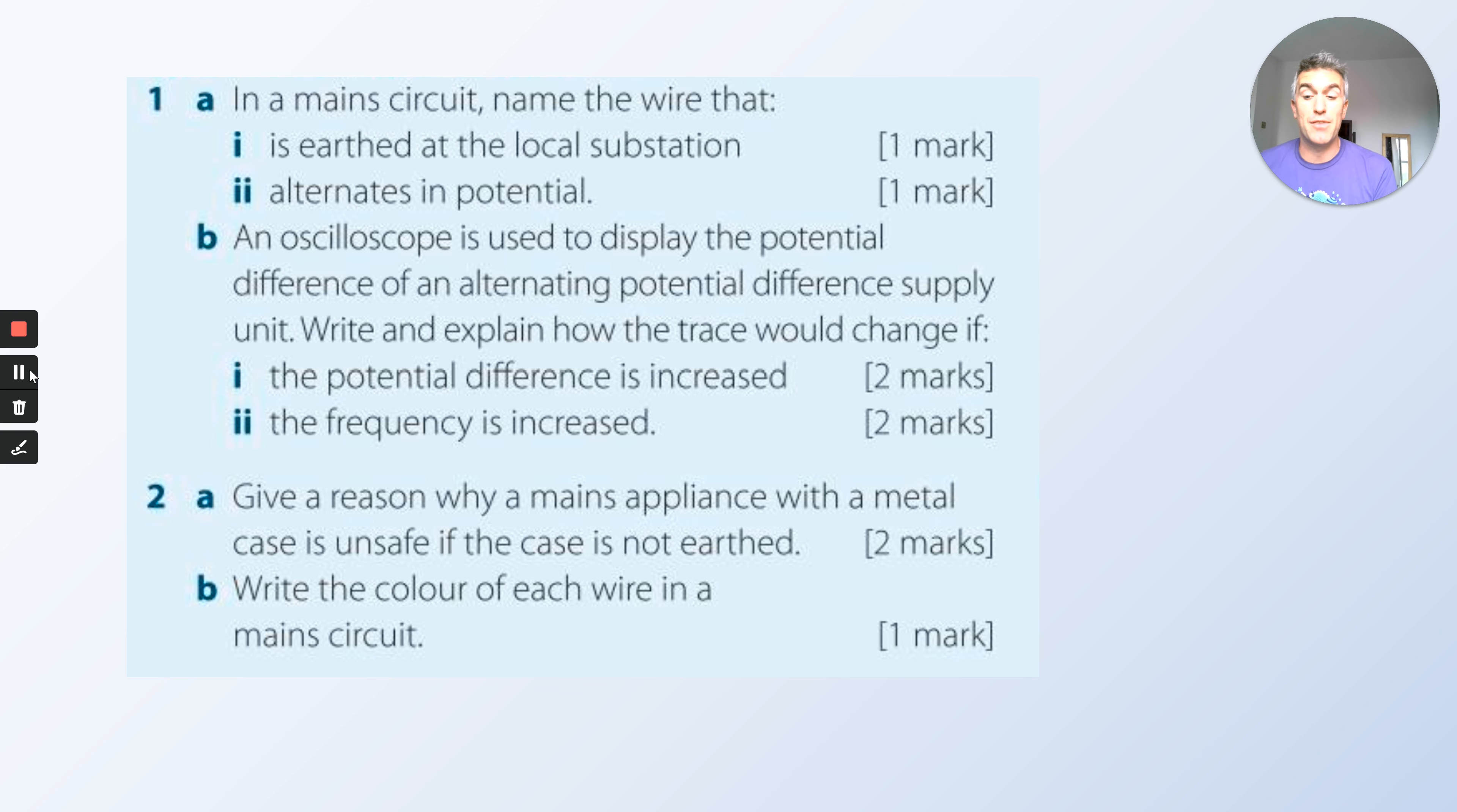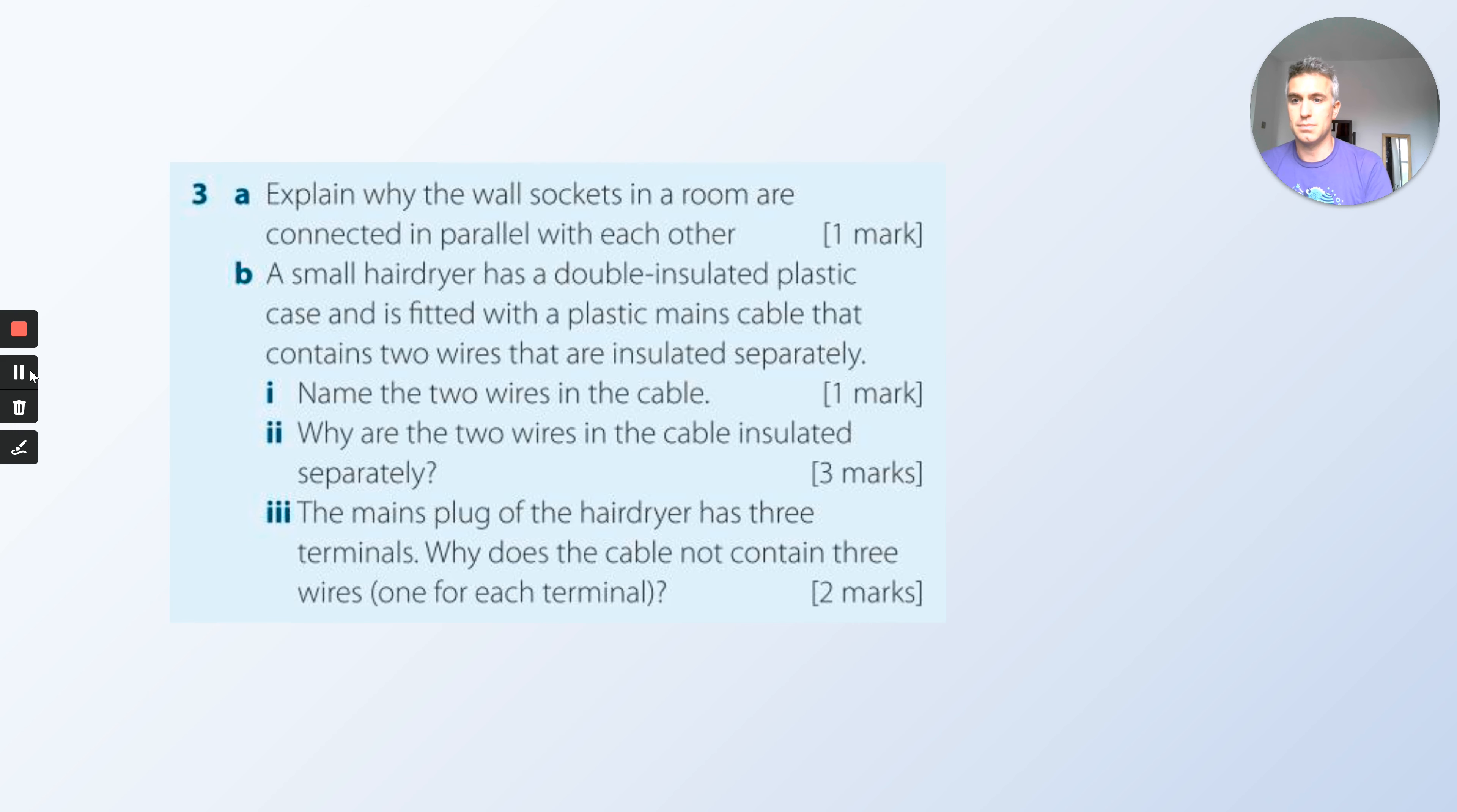Give a reason why mains appliances with a metal case is unsafe if it is not earthed. Think about what the earth does. And write the color of each wire in a mains circuit.